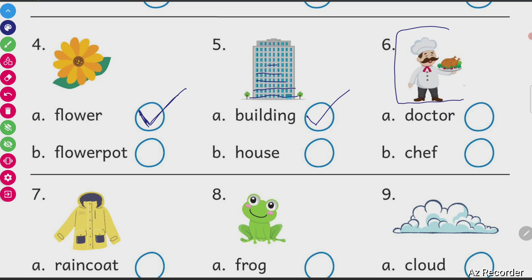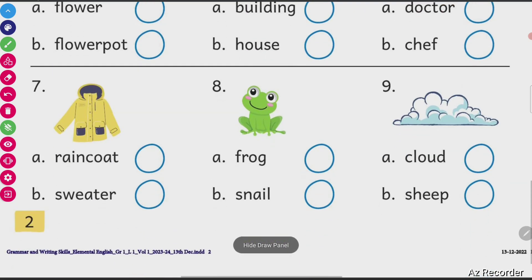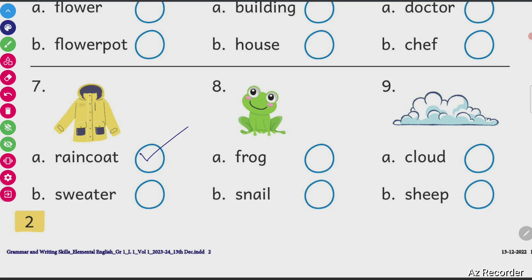Who is this — a doctor or a chef? He has a plate full of chicken in his hand. He is wearing a white hat on his head. So he is a chef. Next, this is a raincoat or a sweater? Obviously, this is a raincoat, not a sweater.